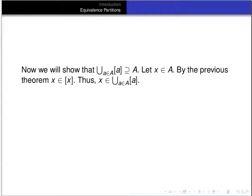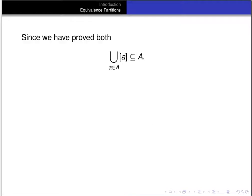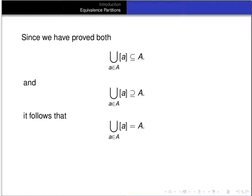So if x is an element of the underlying set A, then it's a member of one of the equivalence classes, and therefore a member of the union of the equivalence classes. We've now proved both that the union of equivalence classes is a subset of A, and A is a subset of the union of equivalence classes. Therefore the union of the equivalence classes equals the underlying set A.